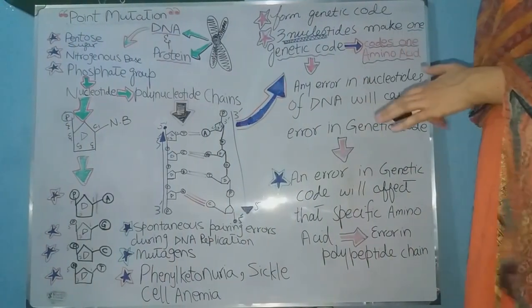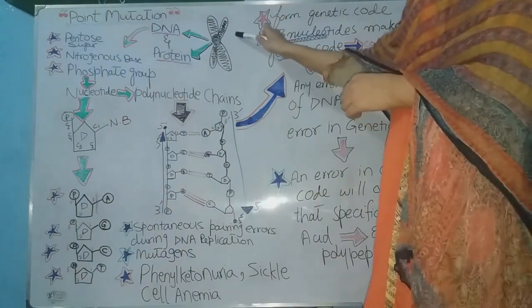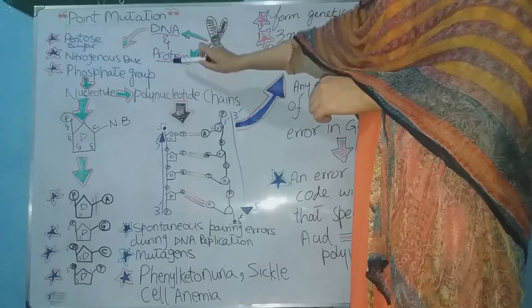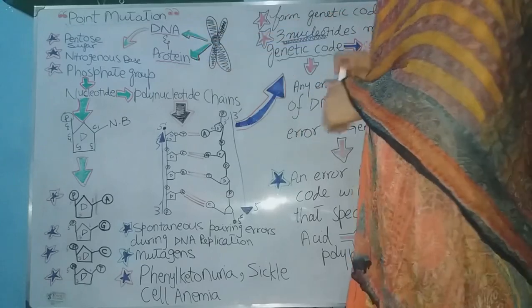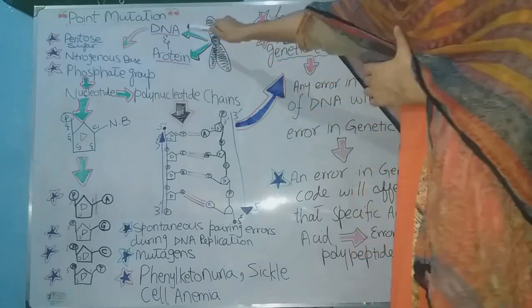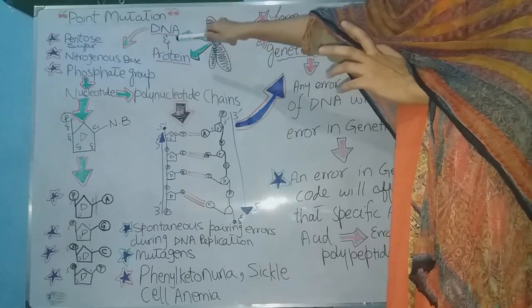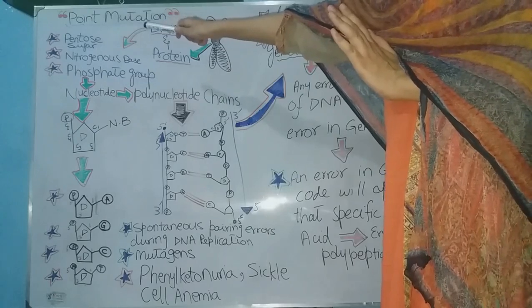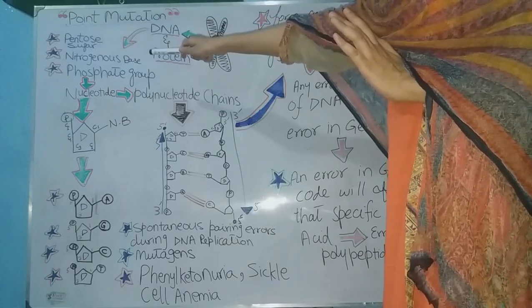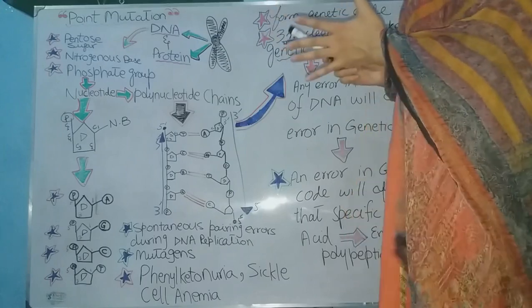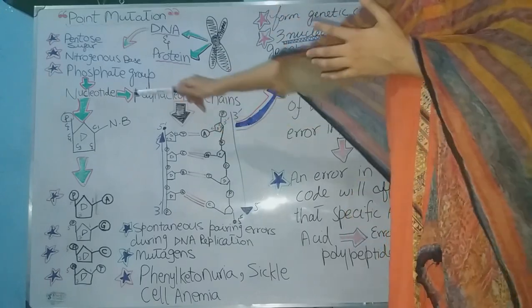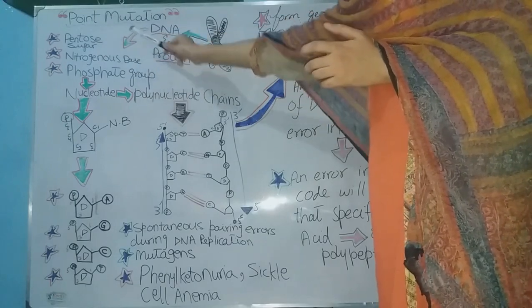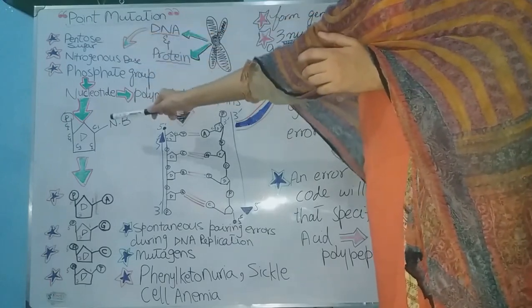Today we will talk about point mutation. If we see the structure of a chromosome, we know that it is made up of two things: DNA and protein. If we see the structure of DNA, we come to know that it contains three components: pentose sugar, nitrogenous base, and phosphate group. These three things actually form a nucleotide. In the case of DNA, that pentose sugar is deoxyribose sugar.